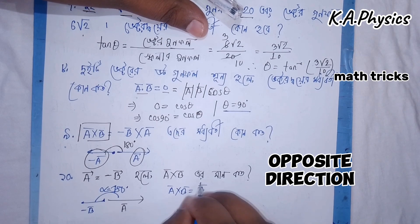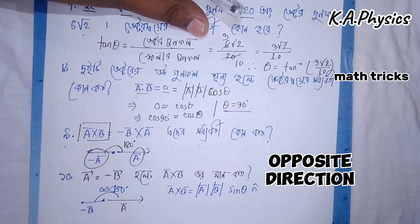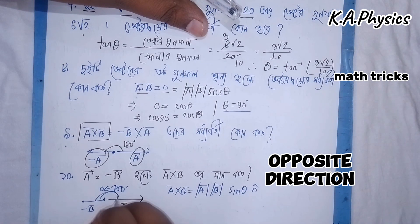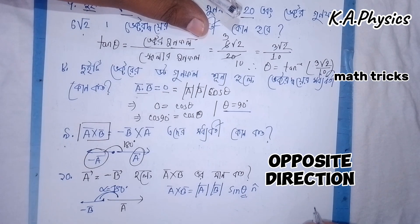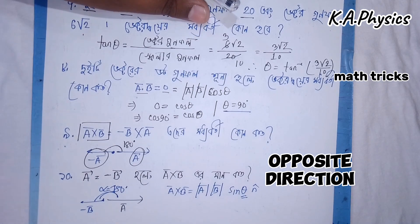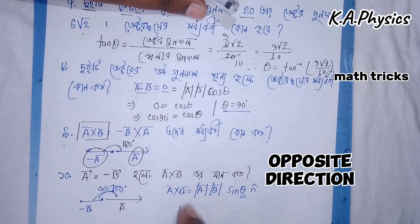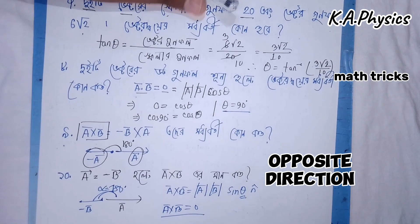This is n-cap. If you look at sin(180), you see sin(180) is zero. So A cross B will be zero — that means the vectors are parallel.